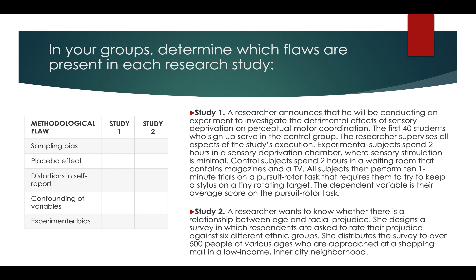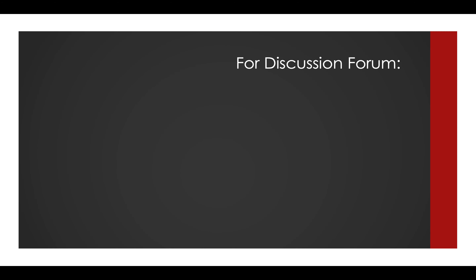Study two: a researcher wants to know whether there is a relationship between age and racial prejudice. She designs a survey in which respondents are asked to rate their prejudice against six different ethnic groups. She distributes the survey to over 500 people of various ages, approached at a shopping mall in a low-income inner-city neighborhood. Think about the sampling issues with that approach.